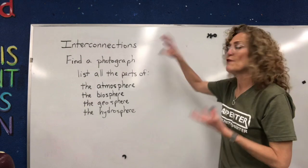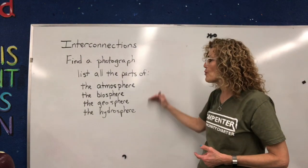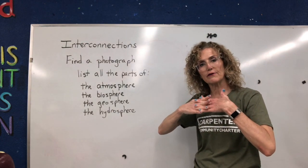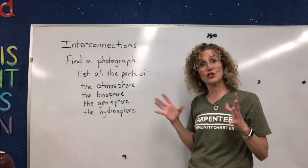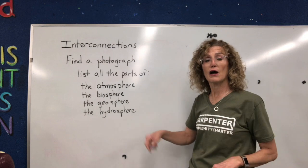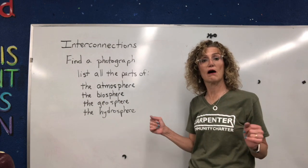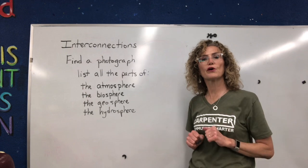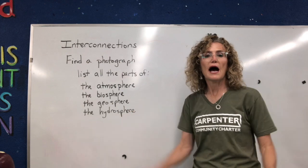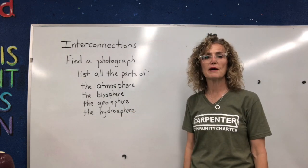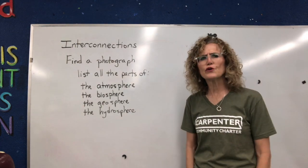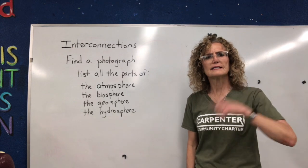So boys and girls, what I want you to do is find one photograph, list all the parts of each sphere, and then write how they are all interdependent on one another. This is the end of this section of our unit on Earth and space. Next time we'll start a space project. Great to see you, Cougars — keep up the good work. I miss you. I believe in you — you are smart, you are hardworking, you are going to be awesome. See you next lesson!